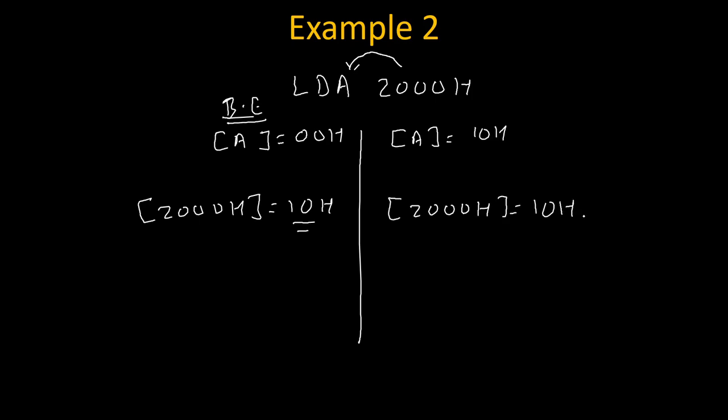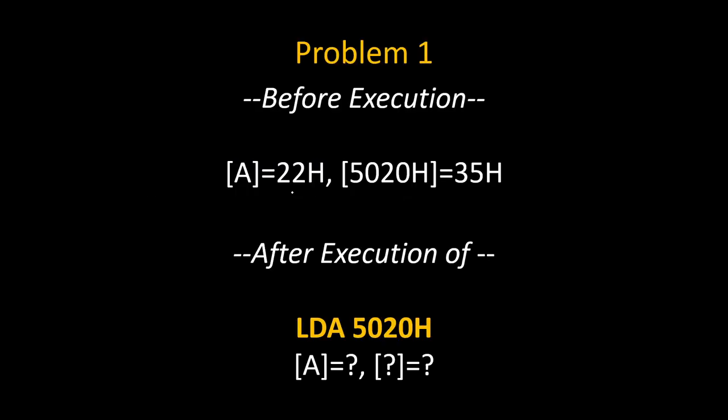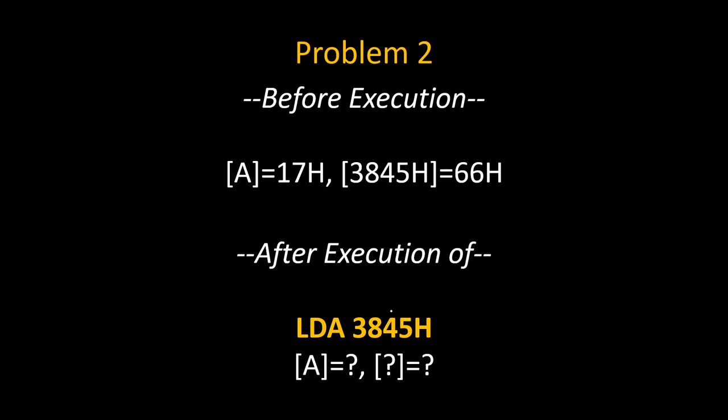Now here are some practice problems — you can solve them and write your answers in the comments. Problem 1: before execution, the accumulator is 22H and the content of address 5020H is 35H. What will happen after execution of LDA 5020H? Problem 2: before execution, the accumulator is 17H and the content of address 3845H is 66H. After execution of LDA 3845H, what will be the content of the accumulator? Thank you.